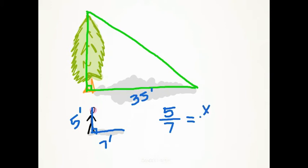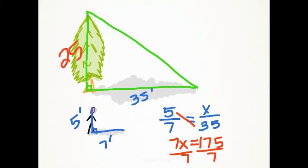So five times 35 is 175, seven times x will give us 7x. And then we need to divide both sides by seven, so x will equal 25 feet.